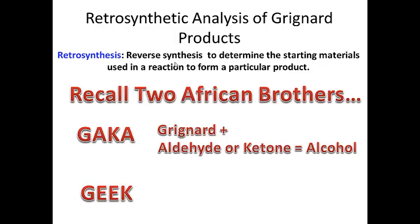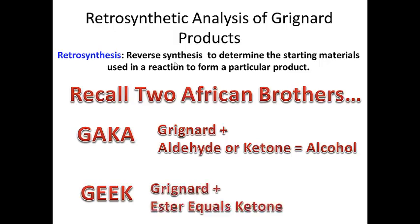Recall the two mnemonics: GACCA and GEEK. Grignard plus aldehyde or ketone equals alcohol. So if the question is posed — I start with an alcohol — I ask: what Grignard reagent and what aldehyde or ketone reacted together to give that alcohol? The same applies to GEEK: Grignard plus ester equals ketone, so I should be able to determine what Grignard and what ester react together to give a particular ketone.